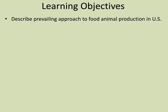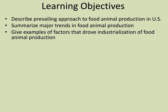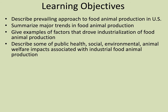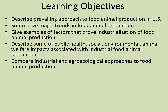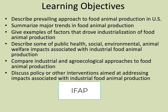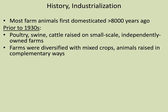First, we'll go through the learning objectives. Describe the prevailing approach to food animal production in the U.S., summarize major trends in food animal production, give examples of what drove industrialization of food animal production — and notice we're saying 'food animal production.' We used to call them farms; in some ways how animals are produced is more like an assembly line. Describe public health, social, environmental, and animal welfare impacts associated with industrial food animal production, or IFAP.